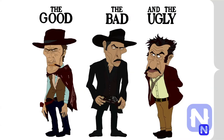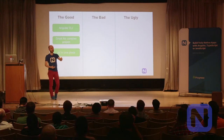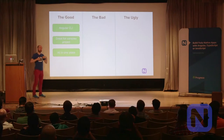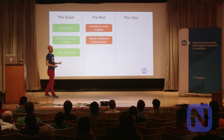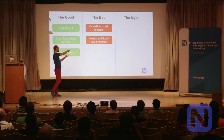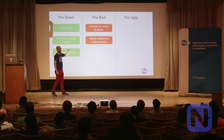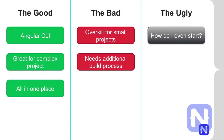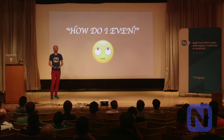Pros and cons of the monorepo: the good — you can reuse Angular CLI, and when you create a service, it's automatically used for both platforms. It's great for complex projects; everything is in one place so it's very maintainable. The bad — it's overkill for small projects. If you have two screens, the complexity of the build tool will be bigger than the project itself. The additional build process is usually a challenge — though it's a challenge accepted. The ugly: how do I even start?